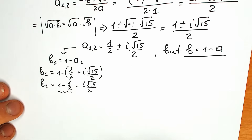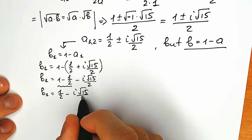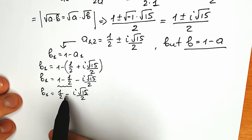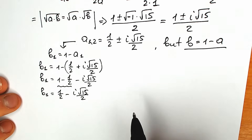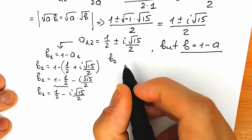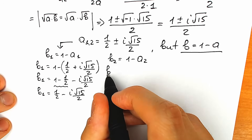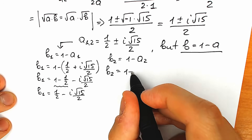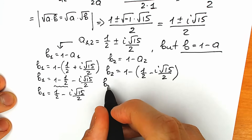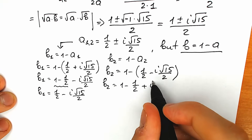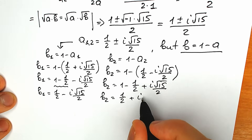So 1 minus one-half gives us b₁ equals one-half minus i times square root of 15 over 2. This is symmetrical because we used the positive a₁ and got a negative b₁. For b₂, using a₂ with the negative sign: 1 minus (one-half minus i√15/2) gives b₂ equals one-half plus i times square root of 15 over 2.